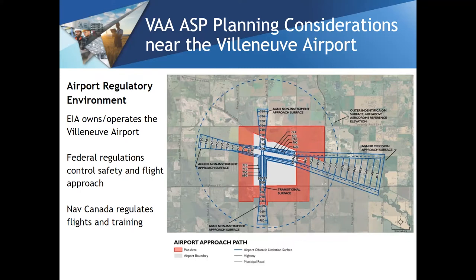Airports are generally divided into three internal land use categories: airside, meaning land that has direct access to a taxiway or a runway; groundside, land that is not directly connected to a runway or taxiway; and operational lands, which could be everything from the runway to nav aids and weather stations.